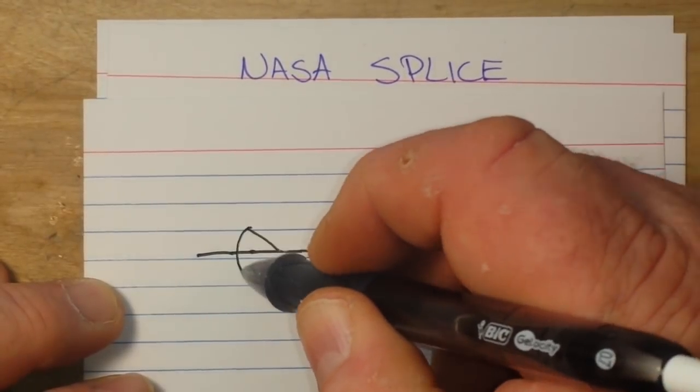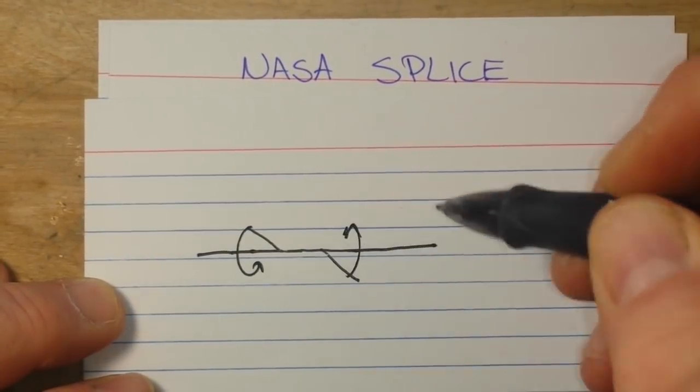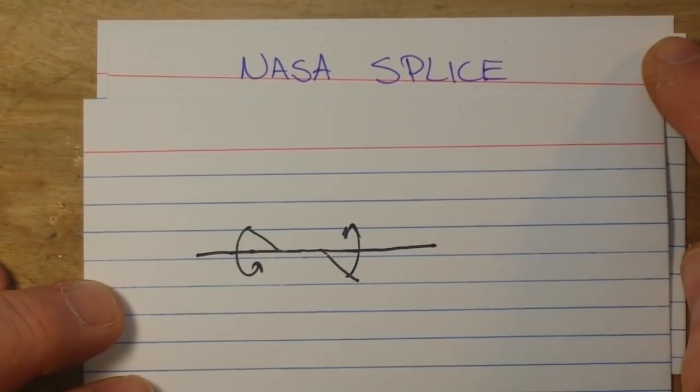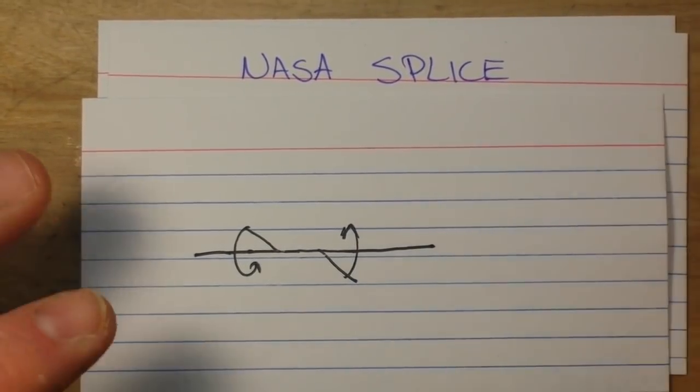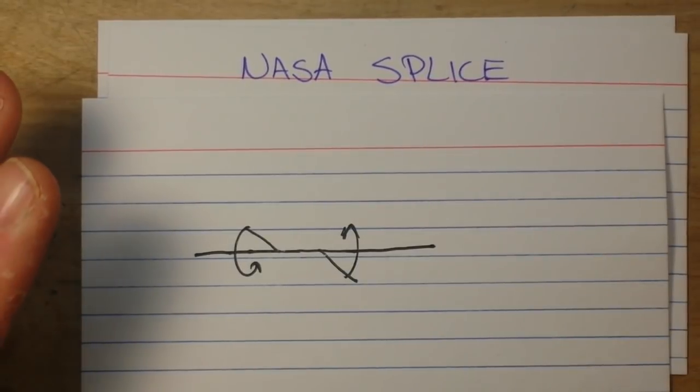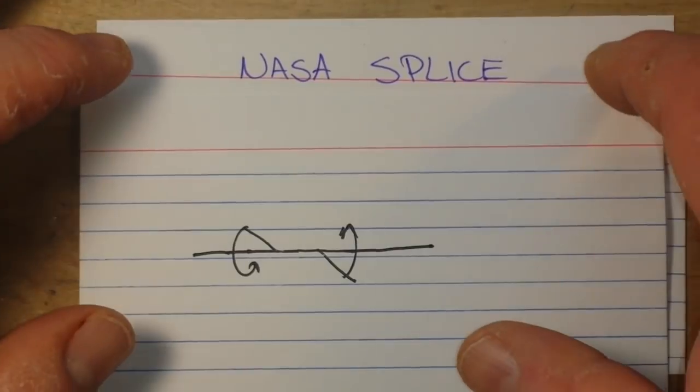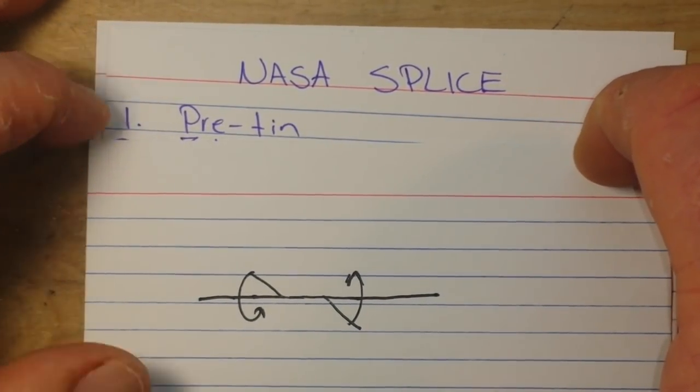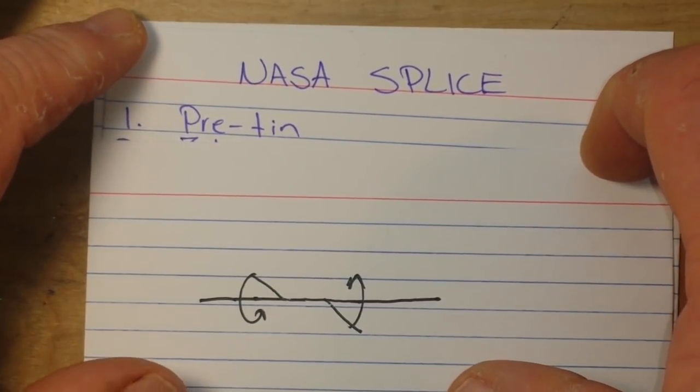Then we're going to twist that around there, and we're going to twist that around there. That's the basics of it. But to make this up to NASA standards - and it is a standard, it is listed in their manual, NASA standard 8739.4 on page 84 - the proper way to do a splice...